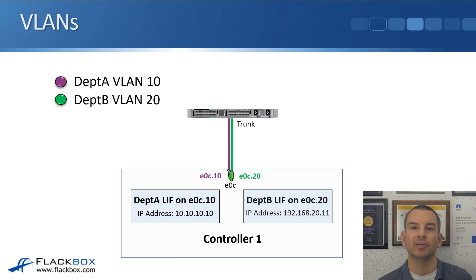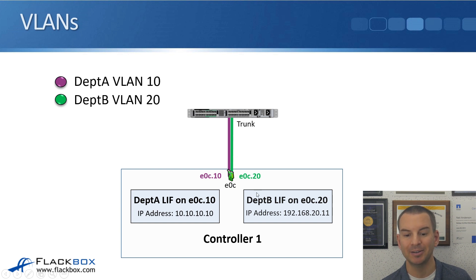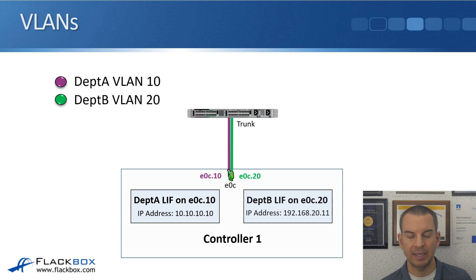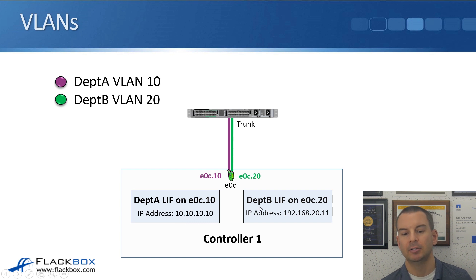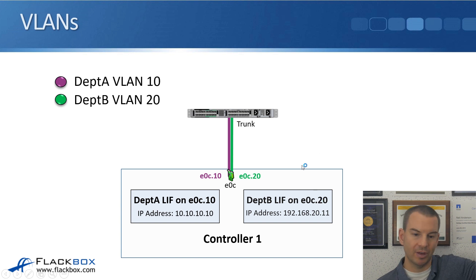If we don't have enough physical ports to give both departments their own ports, they can share the same underlying physical port. On port E0C on my node, I'm going to run traffic for both department A and department B. To keep them secure from each other at layer 3, they use different IP addresses: department A uses 10.10.10.10 and department B uses 192.168.20.11, placing them in different IP subnets. On routers and firewalls outside ONTAP, I can create rules to keep those traffic types separate.